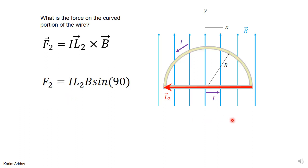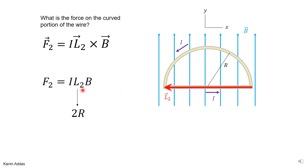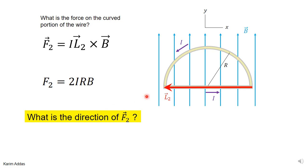To get the magnitude of the force on side two: it's I·L2·B·sin(angle between L2 and B). The angle between L2 and B is 90 degrees, so sin90° = 1, giving I·L2·B. Since the distance L2 is 2R, you get I·2R·B — the same magnitude as for the straight part.